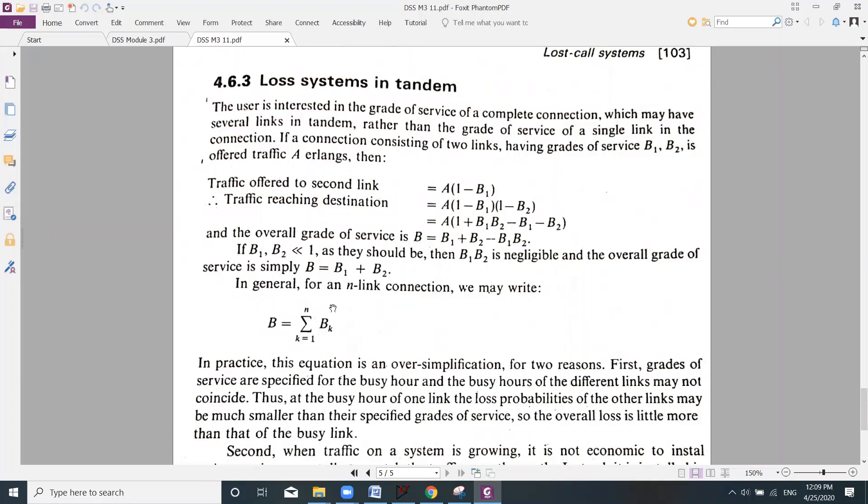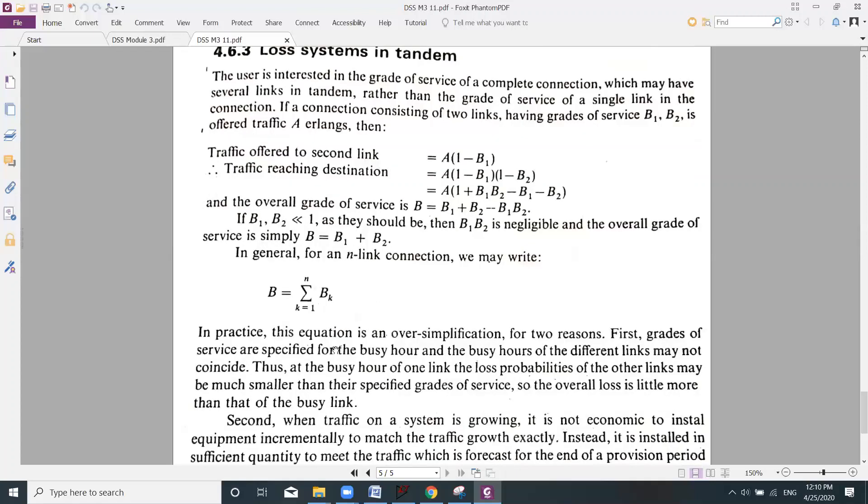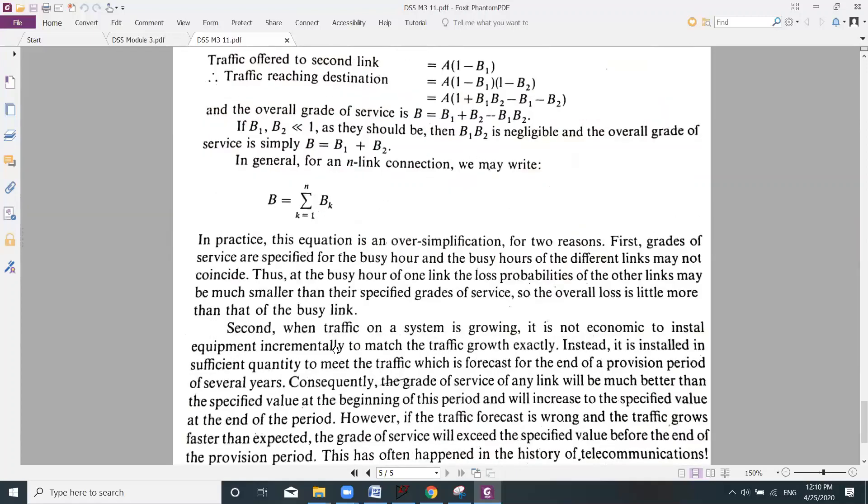In general, for n number of links, we may write B, that is overall grade of service of a system, is the summation of k equal to 1 to N of Bk, where k may be any number, that is n number of links.